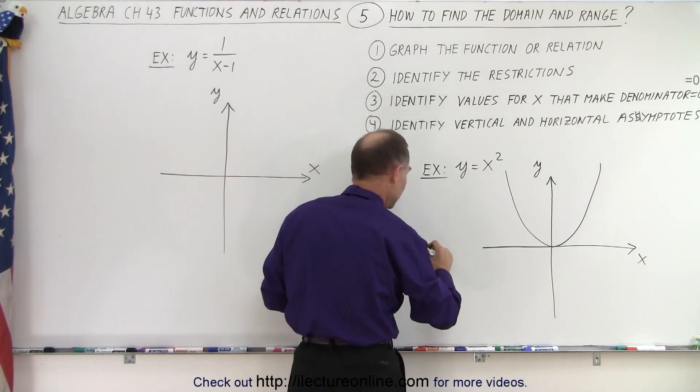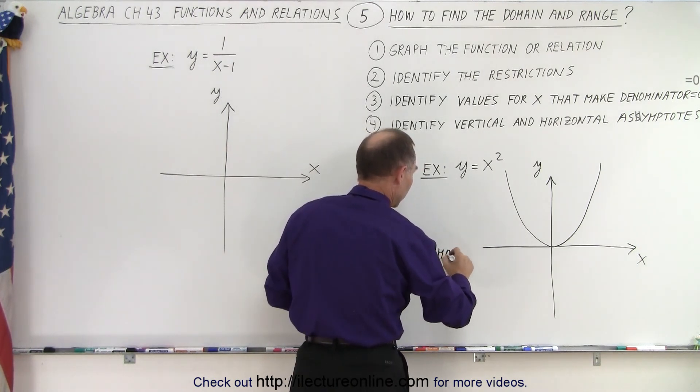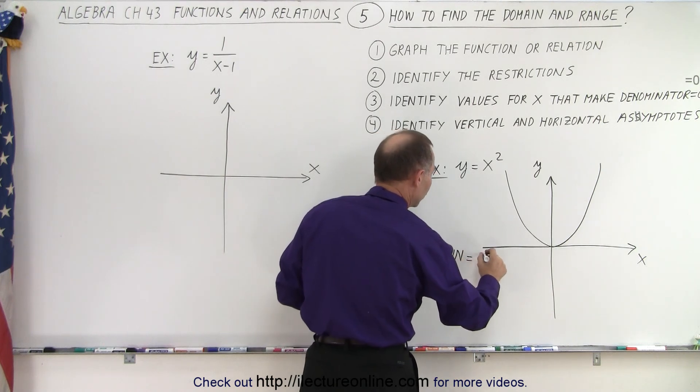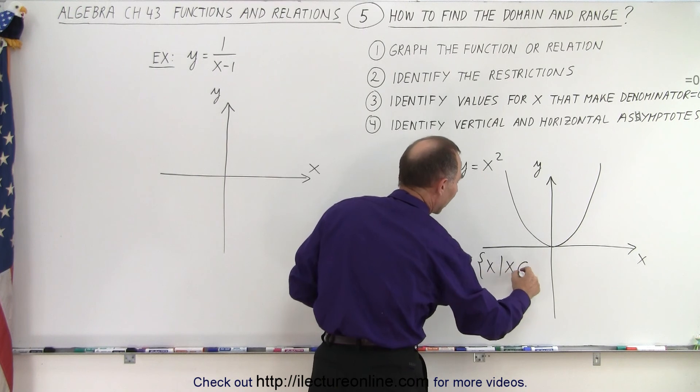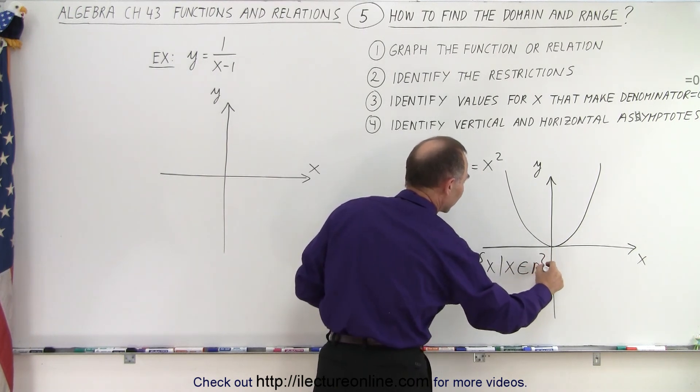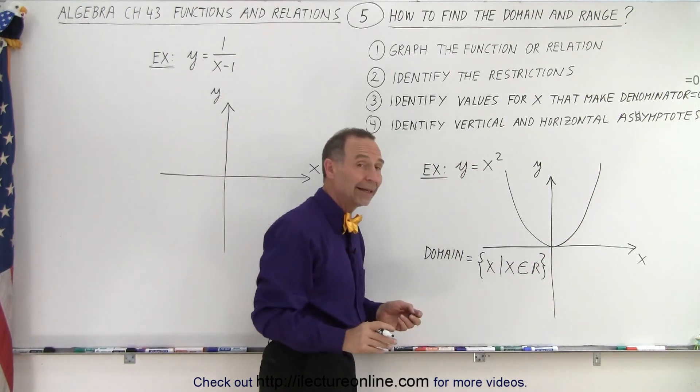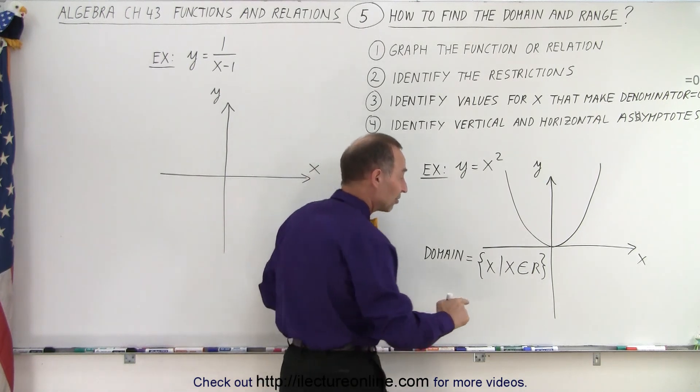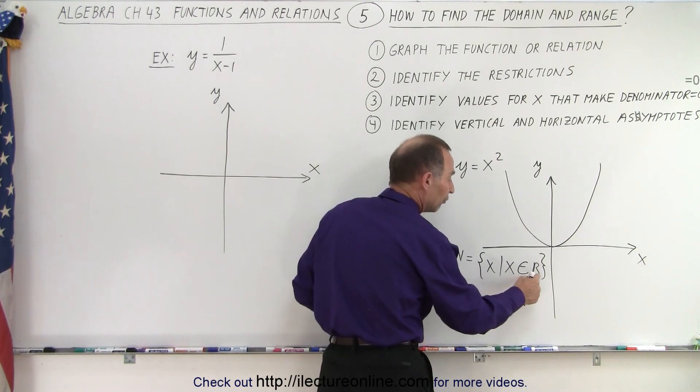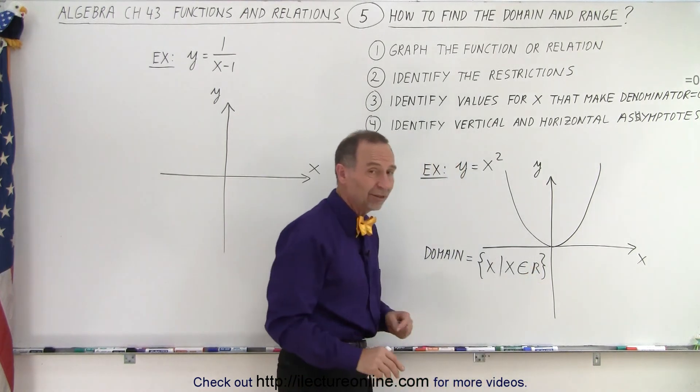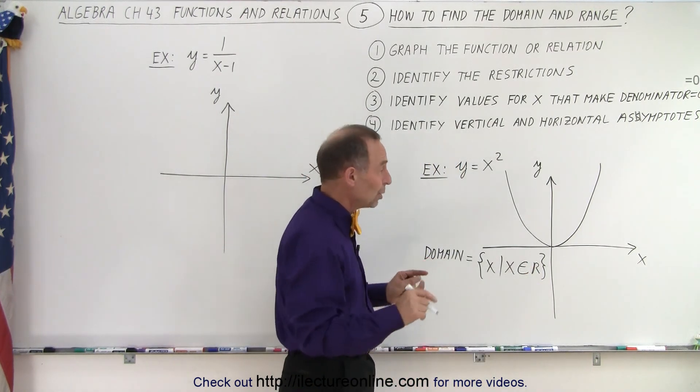Which means, if we then find the domain, the domain is going to be equal to the set of all the x's, such that x is an element of the real values. This is the way we write that there's no restriction on x. It's an element of all the real values in the number system, which means x can be any real number.